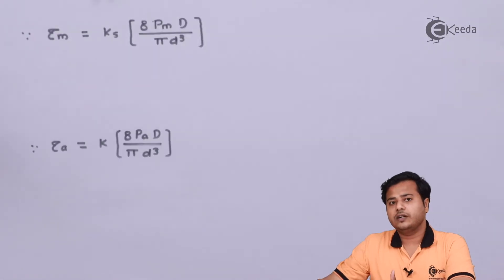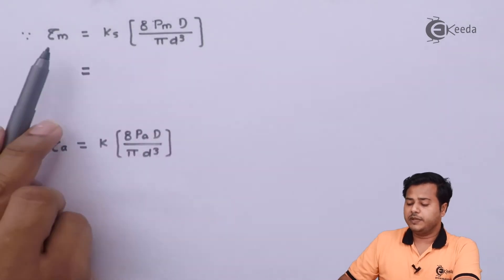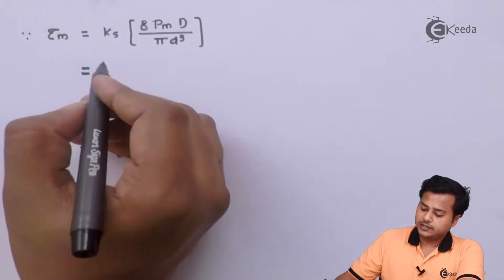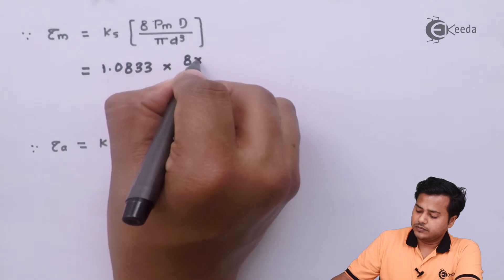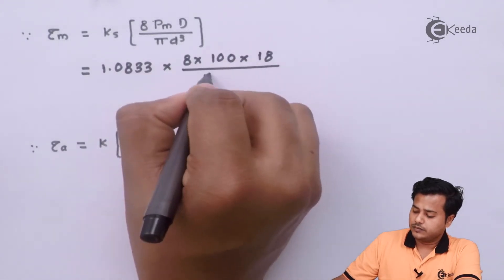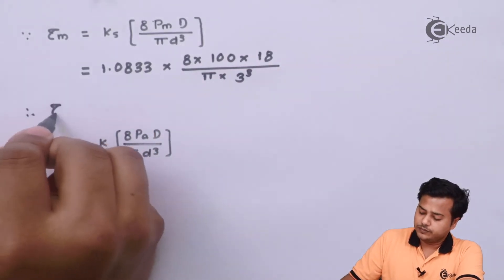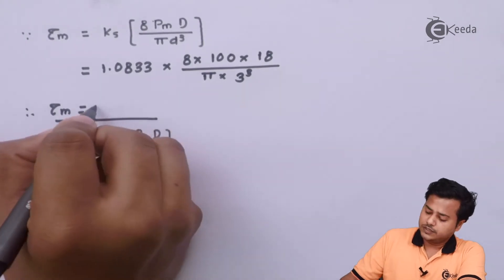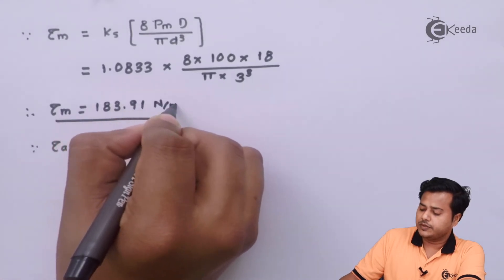Now the next target is to find out the stresses. We know that this is the mean shear stress and this is the amplitude torsional stress. So using this factor, after solving, we will get the value somewhere equal to 183.91 N per mm².